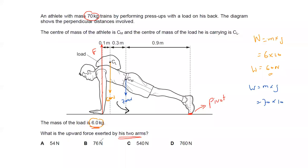With the pivot at the feet, as the athlete moves downward, the rotation is anti-clockwise. So both the weight of the athlete and the weight of the load are causing an anti-clockwise rotation. The upward force from the arms, however, causes a clockwise rotation.